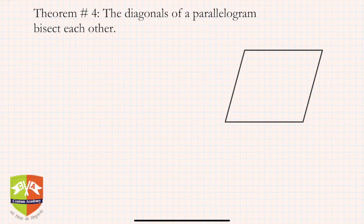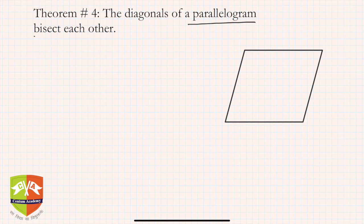Welcome friends. Let's take up another theorem related to parallelograms. This is another property of a parallelogram and it says the diagonals of a parallelogram bisect each other. That means wherever they meet, they split each other into two equal parts.